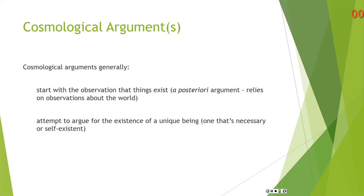So when it comes to cosmological arguments, generally, they start with the observation that things exist. So it's a posteriori. Namely, it relies on observations about the world. And they attempt to argue for the existence of a unique being. For example, one that's necessary, or one that's self-existent. And we'll talk a little bit about those terms later on. But basically, you start with something exists. Therefore, there's some unique being who brought it into existence, or brought all of this into existence.